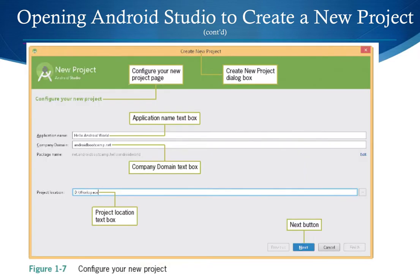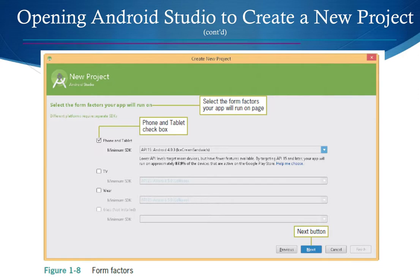When creating a new project, enter your application name and company name — something like 'yourname.com.' In my case I used Jeffrey Seaman. Choose a project location to save your files, then click Next. On the next screen, choose the target platform: phone and tablet, television, wear (smartwatch), or Google Glass. For this class, we'll focus on phone and tablet.